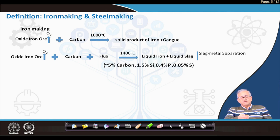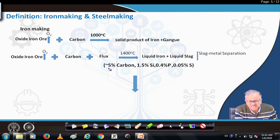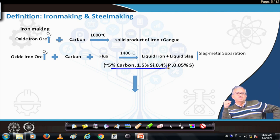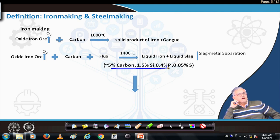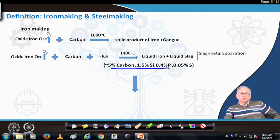This is the typical composition of hot metal: approximately 4–5% carbon, 1.5% silicon, 0.4% phosphorus, 0.05% sulfur. These impurities must be significantly reduced. Silicon comes from reduction of silica, phosphorus from direct reduction of P2O5 — all come into the liquid since diffusion is higher in the liquid state. Carbon approaches saturation level because iron is being reduced by carbon, and from the iron-carbon diagram at around 1200°C, saturation is about 4–5%.